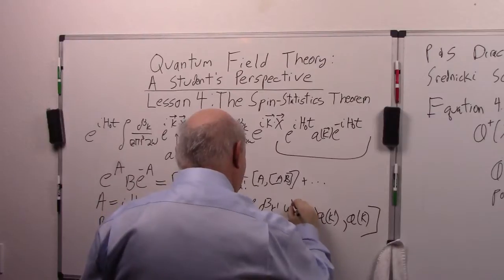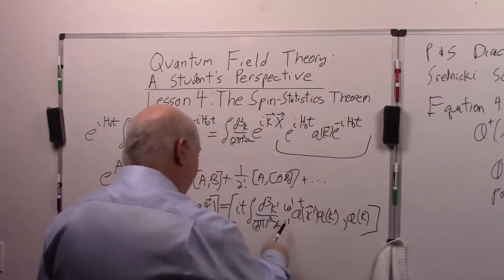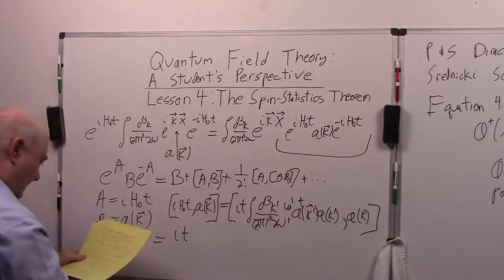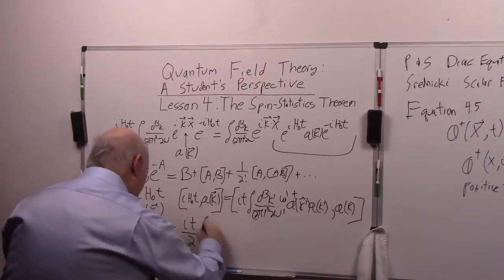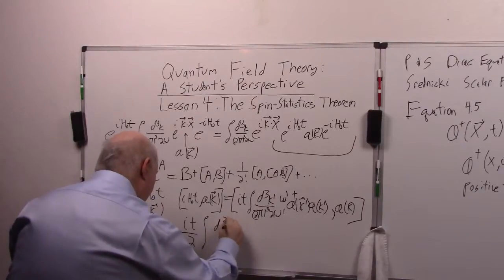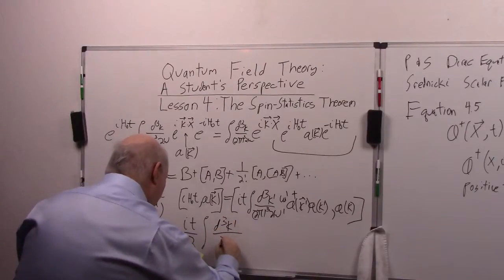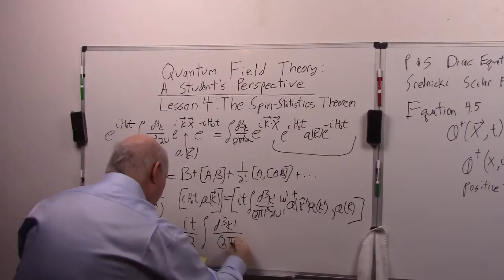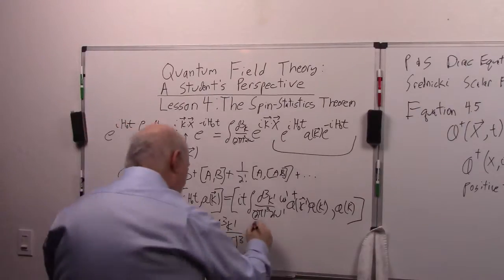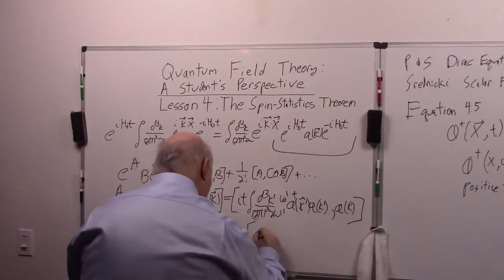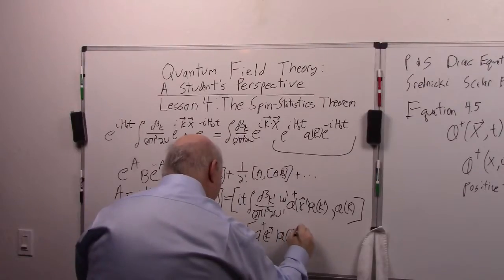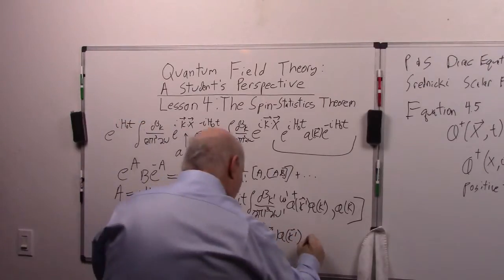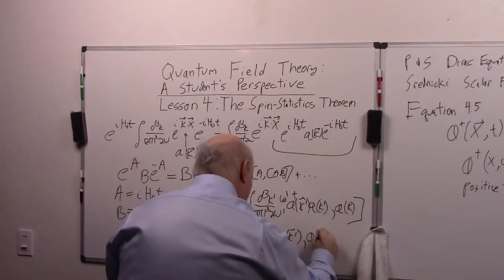We'll cancel out the omega prime in the denominator. So I'm going to get IHωT over 2 integral d³k' over 2π³ times the commutator A†(k') A(k') comma A(k).